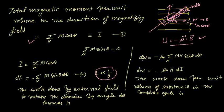dW we are trying to find out using this formula—that is, the potential energy to find out the work done. So here dW is equal to minus μ₀ summation over N of MH sin θ.